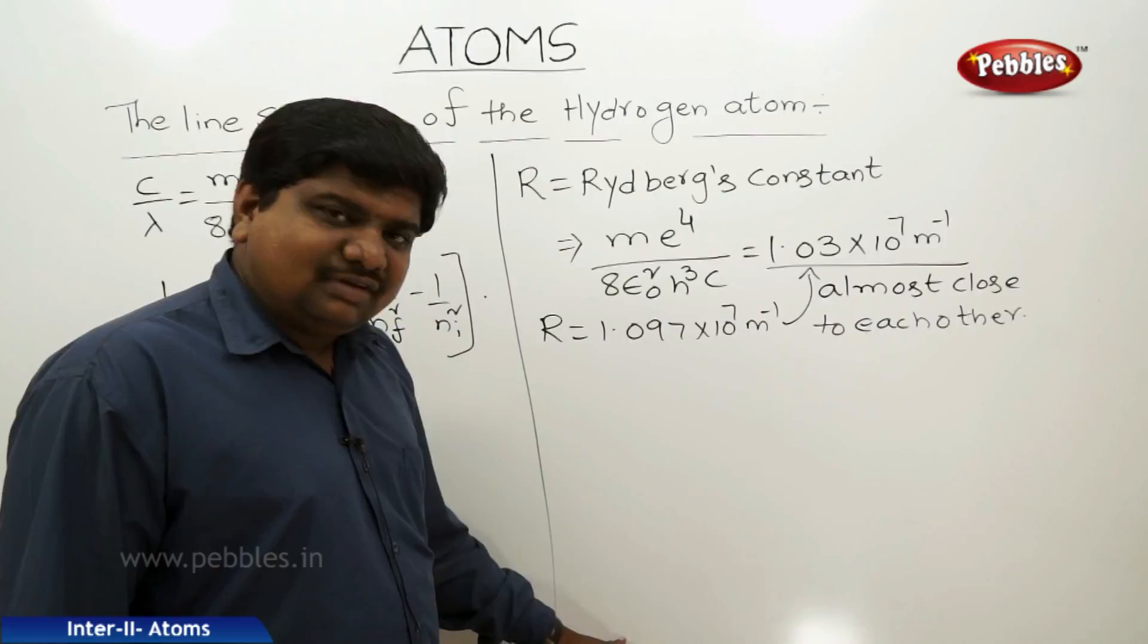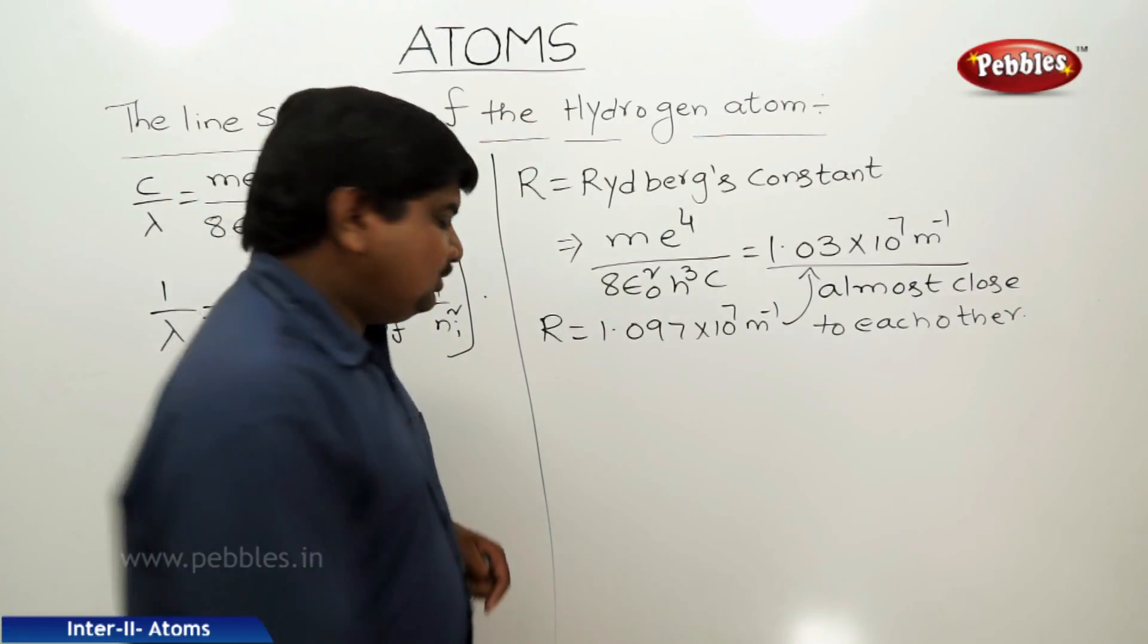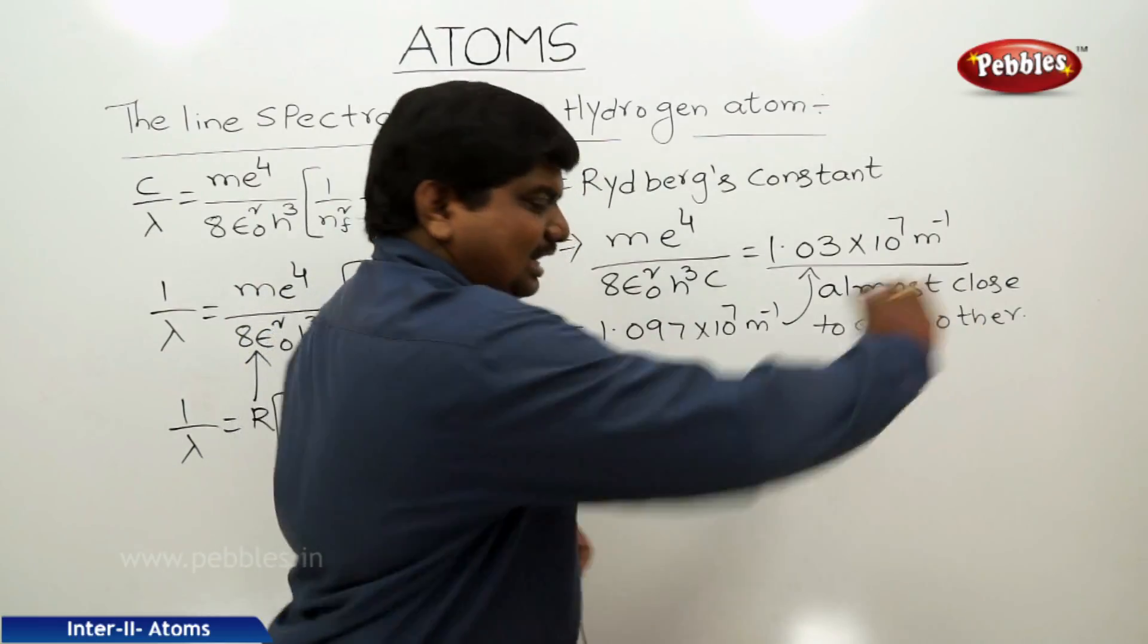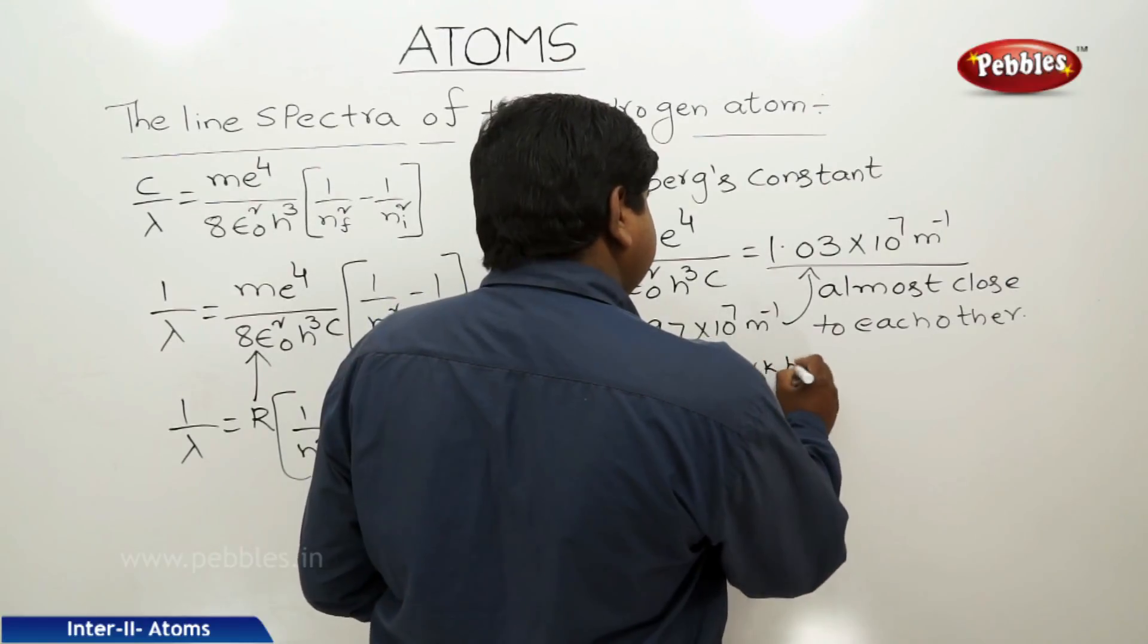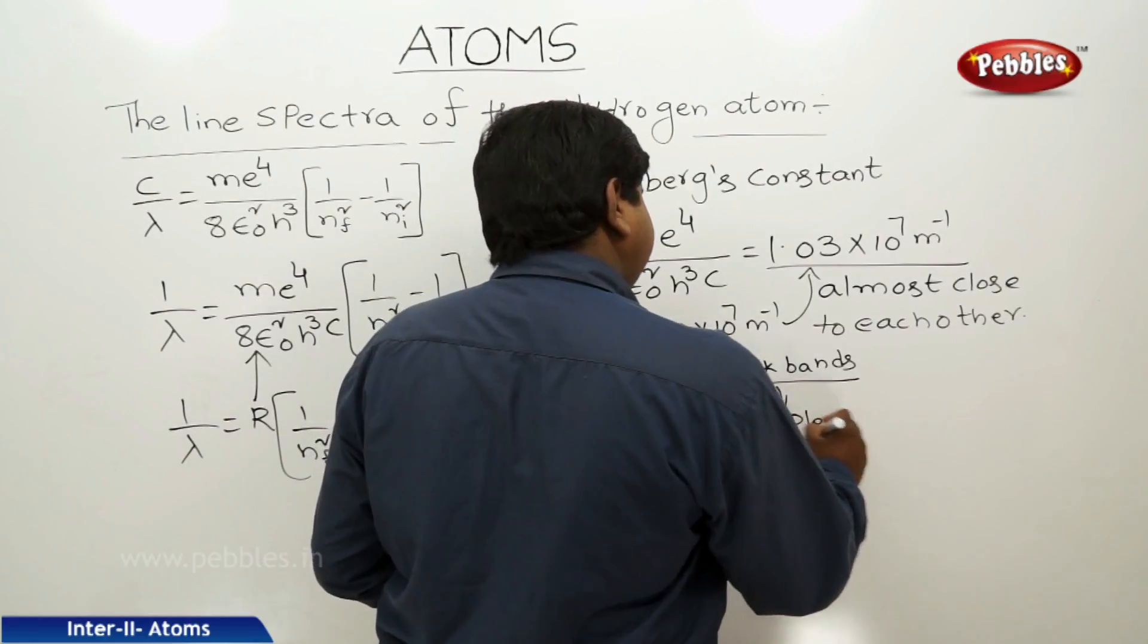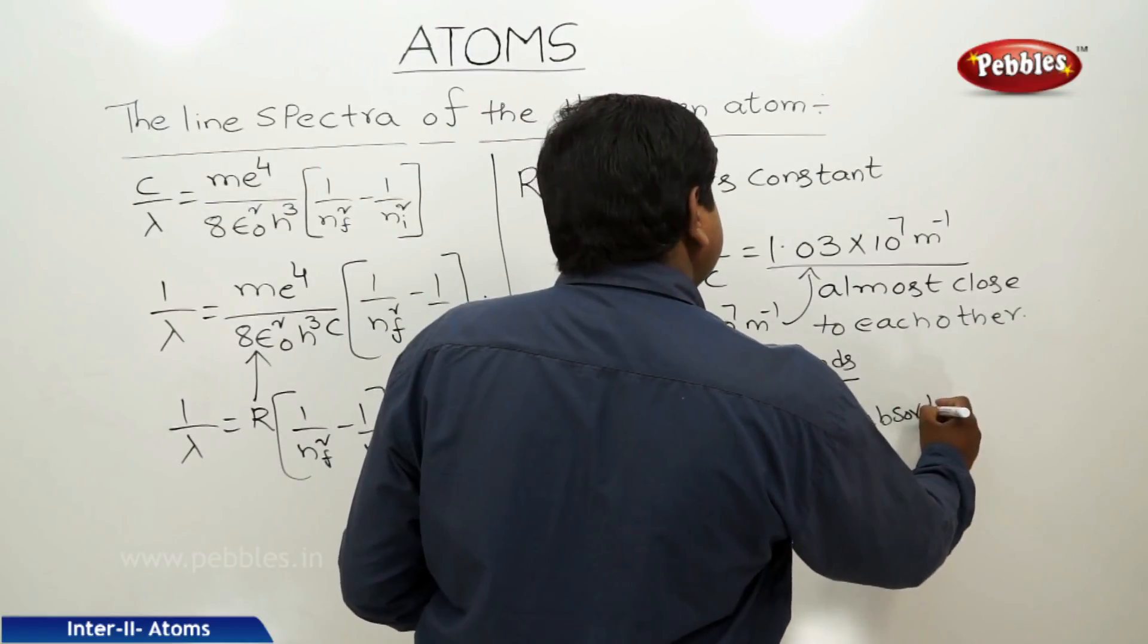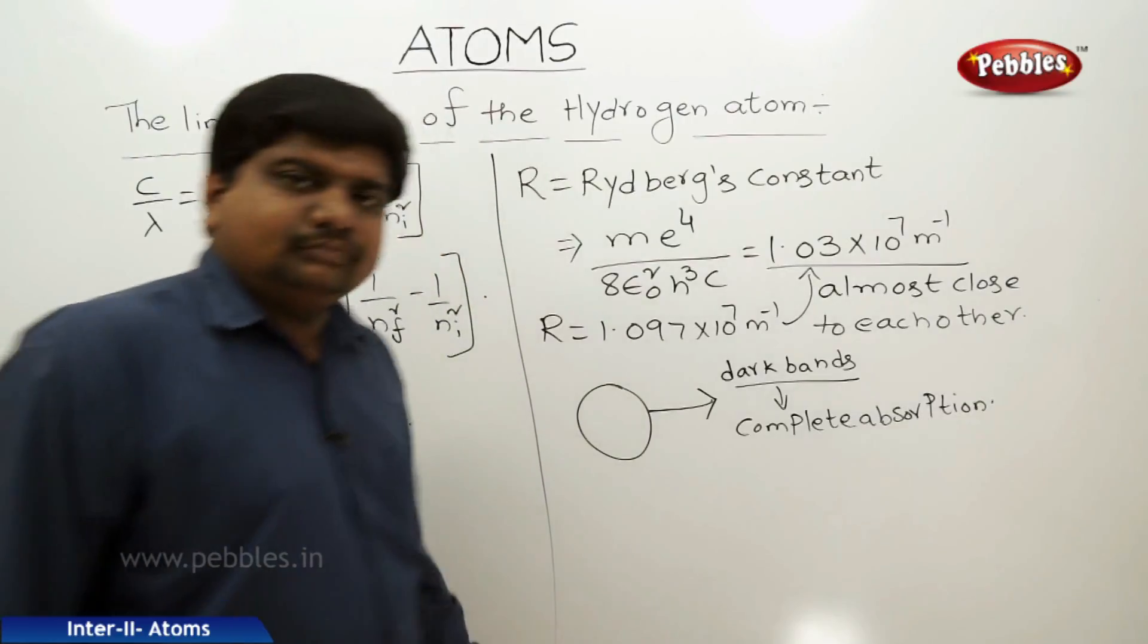In this case, electrons completely absorb the energy. If these transitions are arranged in a band form, we will get dark bands. Darkness is due to the complete absorption of energy.